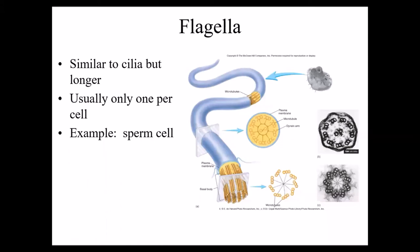Flagella are also made out of microtubules, so the structure is the same as cilia, but a flagellum is much longer. Usually if a cell has flagella, it has just one, and the flagella allows for movement or locomotion of that cell.